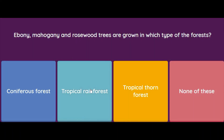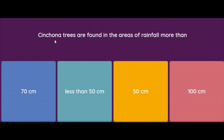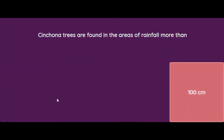Cinchona trees are found in areas with rainfall of more than 70 cm, less than 50 cm, 50 cm, or 100 cm? The correct answer is that cinchona trees are found in areas where the rainfall is more than 100 centimeters.